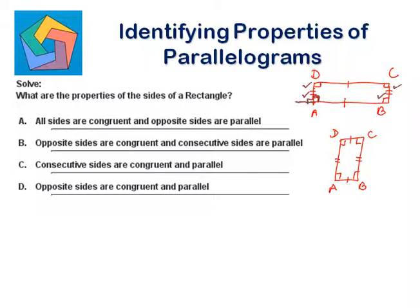Similarly, these two lines also become parallel. So we can say in a rectangle, opposite sides are congruent and parallel. That is the answer for part A.